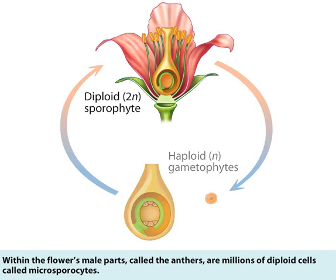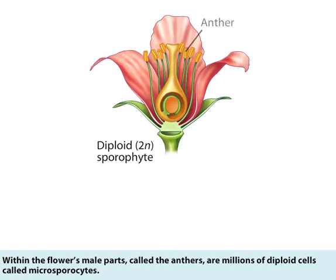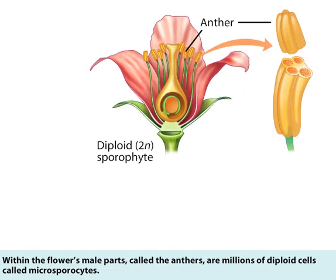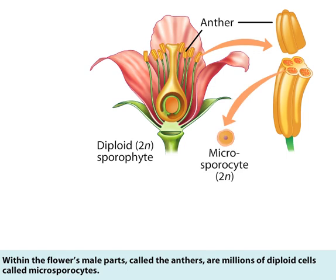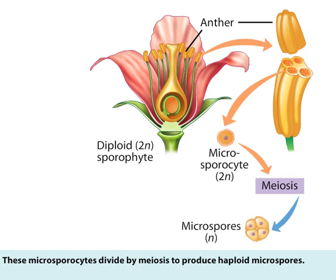Within the flower's male parts, called the anthers, are millions of diploid cells called microsporocytes. These microsporocytes divide by meiosis to produce haploid microspores.